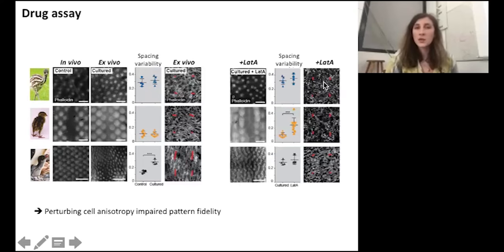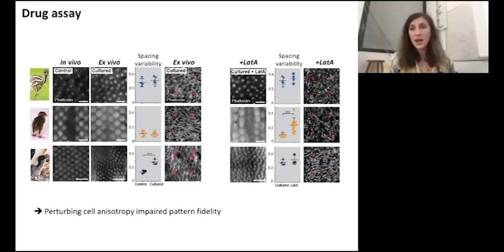In emu, a natural low fidelity pattern, and in ex vivo cultured penguin, we observed no change in pattern fidelity. However, in the quail, a high fidelity pattern, the drug treatment caused an increase in spacing variability, a lower fidelity pattern. So this result actually shows that early dermal cell anisotropy constrains the response of the skin to self-organizing processes to shape pattern fidelity.